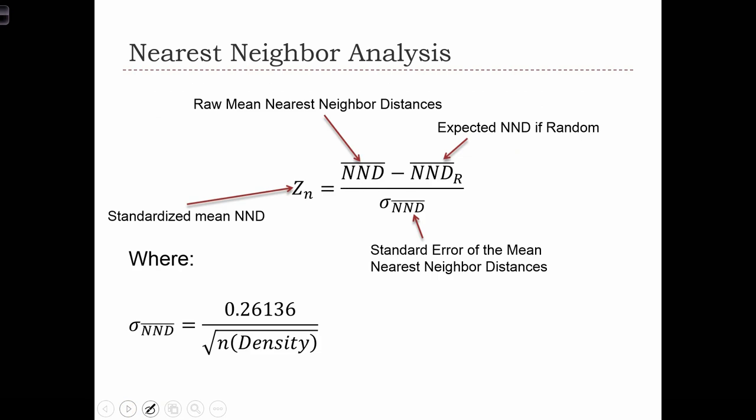To standardize the nearest neighbor statistic, we subtract from the raw nearest neighbor distance the expected NND if random. It's like x bar minus mu. This is the null hypothesis value where NND bar equals NND bar R.